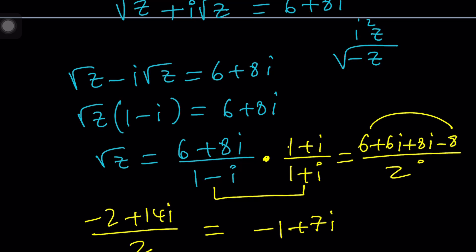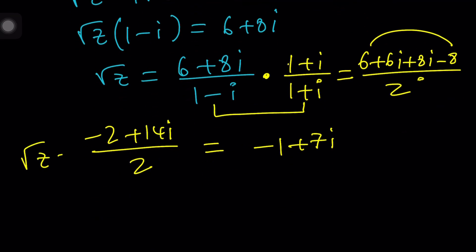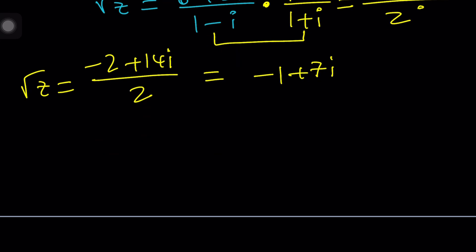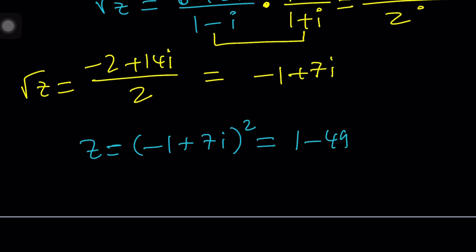Negative 2 plus 14i divided by 2, and that will be negative 1 plus 7i. Really? Is that the answer? Wait a minute. This is not the answer because this is just square root of z. So I'm supposed to square both sides. If you square both sides, you get something like this: z equals negative 1 plus 7i squared. And that will be negative 1 squared plus 7i squared minus 14i, and that's negative 48 minus 14i. And as you know, this is one of the solutions that we obtained using the first method.